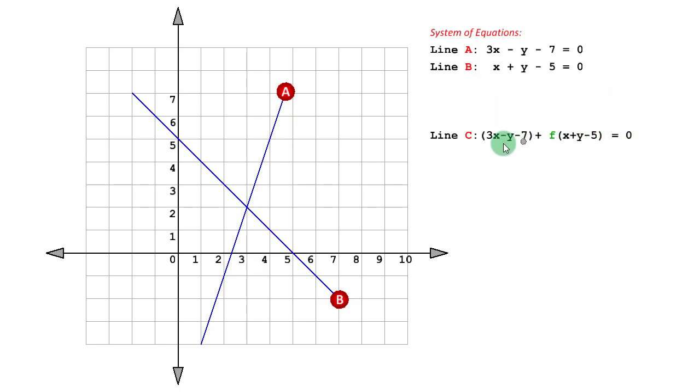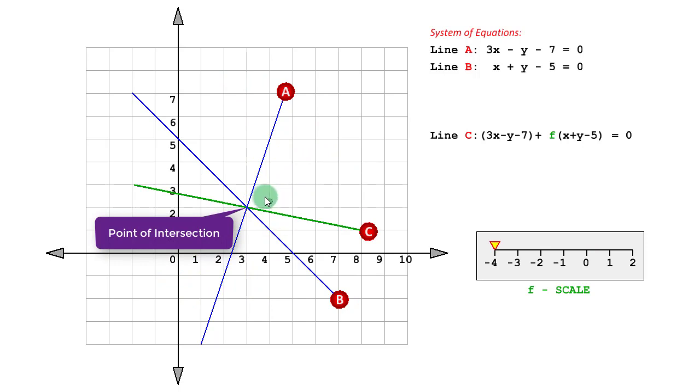This also resulted in a linear equation and therefore a third straight line. And then by changing this factor f over all its possible values, the real numbers, we could change the slope of this third line. By changing this slope, we noticed that something very useful is being preserved here: the point of intersection of these two lines.